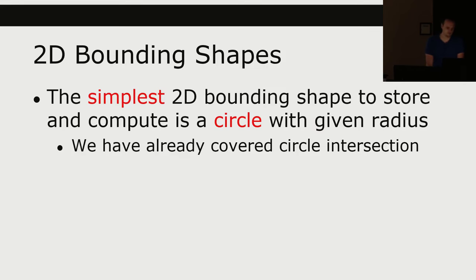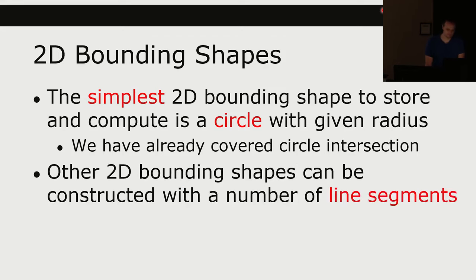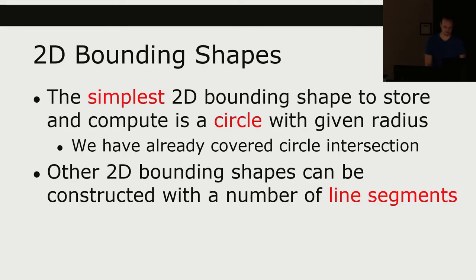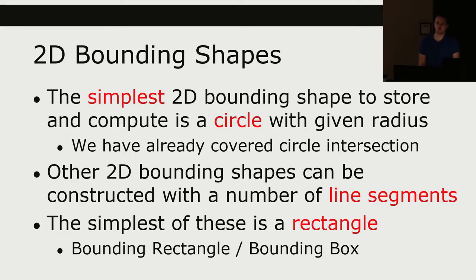The simplest 2D bounding shape to store and compute is a circle with a given radius. We've already covered that in assignment 2, so we just have a point and a radius — you can't get much simpler than that. Other 2D bounding shapes can be constructed with a number of line segments. We can make pretty much any geometric shape with a bunch of line segments, and the simplest of those is a rectangle — that's why we call this a bounding box or bounding rectangle.